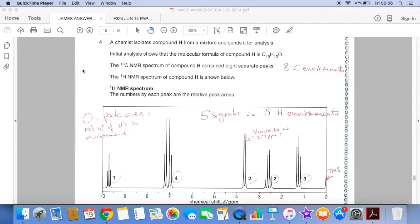So I would really encourage as you're reading through the question, I would be scribbling down what that actually is telling you. So you can see carbon 13, 8 peaks, that means you've got 8 carbon environments. So at some point, once you've got your structure, you're going to have to check that you've actually got 8 environments in your molecule.